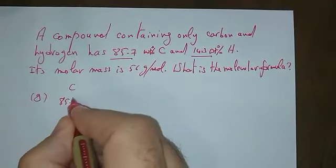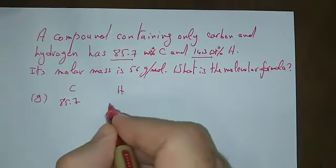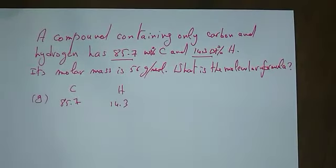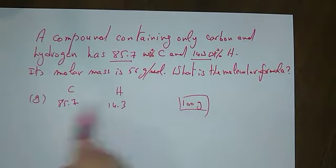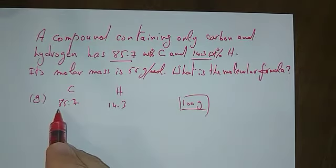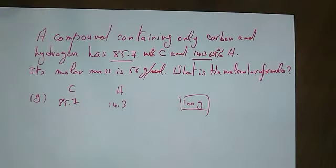Let's say we have for carbon 85.7 grams and for hydrogen 14.3 grams, on the assumption that I have 100 grams. Because instead of giving me grams, I have 85.7 percent and 14.3 percent, so I assume I have 85.7 grams of carbon and 14.3 grams of hydrogen.